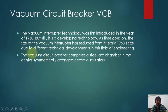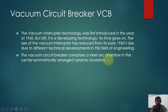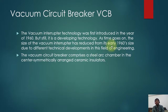The vacuum interruptor technology was first introduced in the year 1960, but it is still a developing technology. As time goes on, the size of the vacuum interruptor has reduced from its early 1960 size due to different technical developments in the field of engineering. The vacuum circuit breaker comprises a steel arc chamber with symmetrically arranged ceramic insulators in the center. Initially, the technology was not well enough to produce a vacuum circuit breaker at medium voltage level.